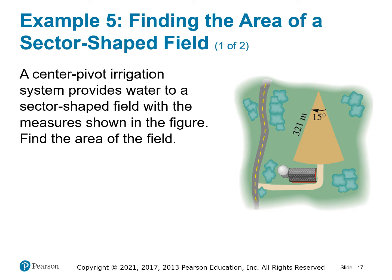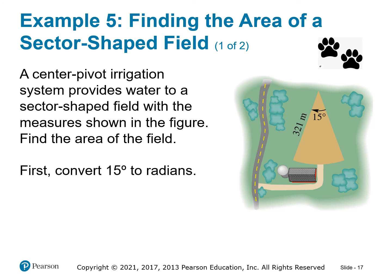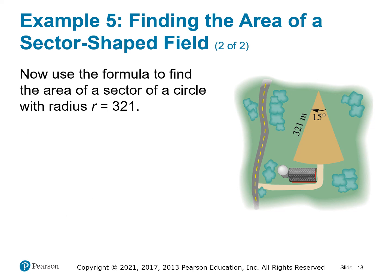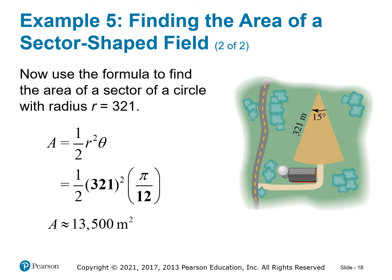Example: a center pivot irrigation system provides water to a sector-shaped field. Find the area of the field. Since the angle is given in degrees, convert to radians first, then apply Area equals one-half r-squared theta. Plugging in the values gives approximately 13,500 square meters.